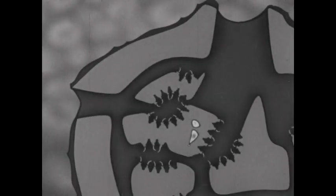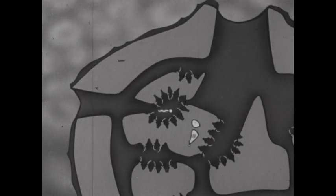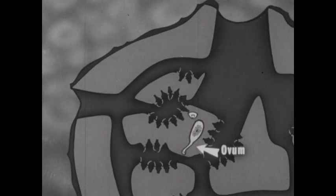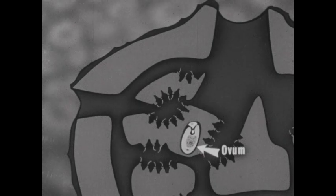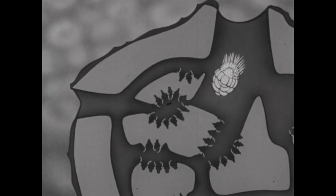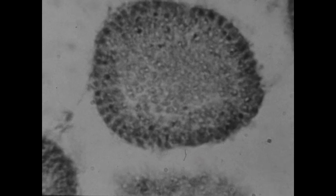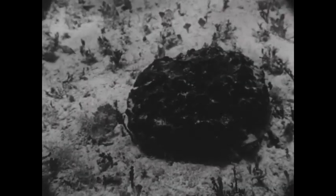Sponges also reproduce sexually, as we'll see in this cross-section drawing. The spermatozoan, or sperm cell from one sponge, may enter another in the water current, passing into a canal. The sperm cell is captured by a holding cell. The ovum, or egg cell, enlarges after uniting with the sperm cell. The fertilized egg, or zygote, gradually develops into a free-swimming larva that moves out of the sponge. This is the microscopic sponge larva. When this larva settles down and becomes firmly attached, it grows into a young sponge.